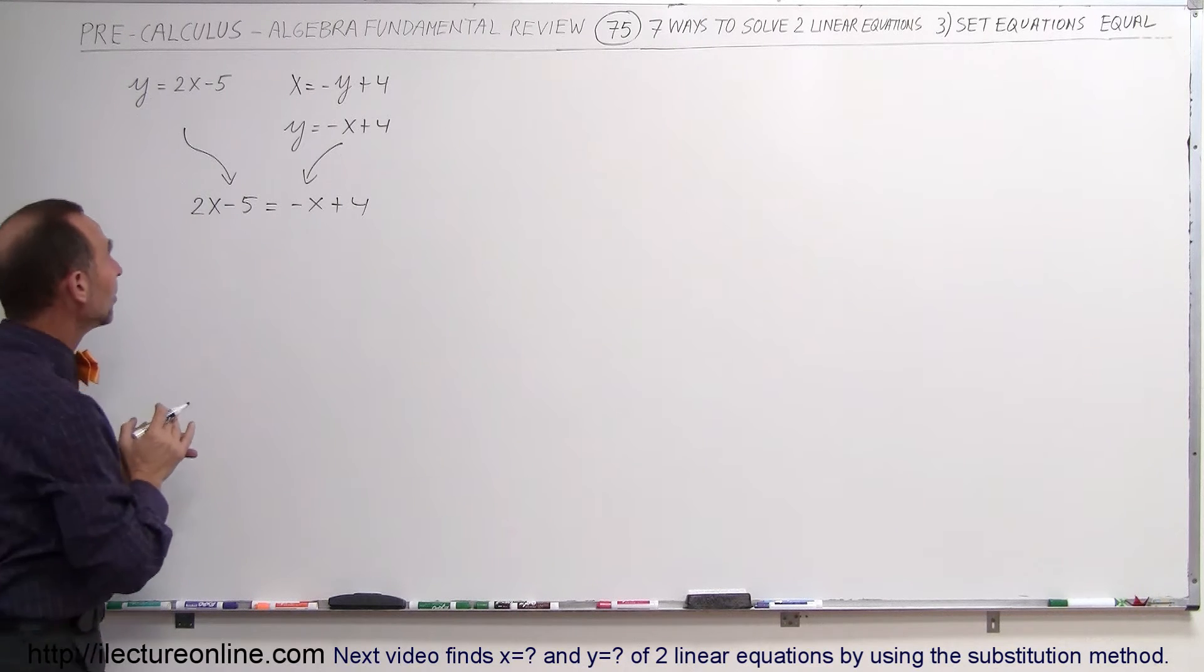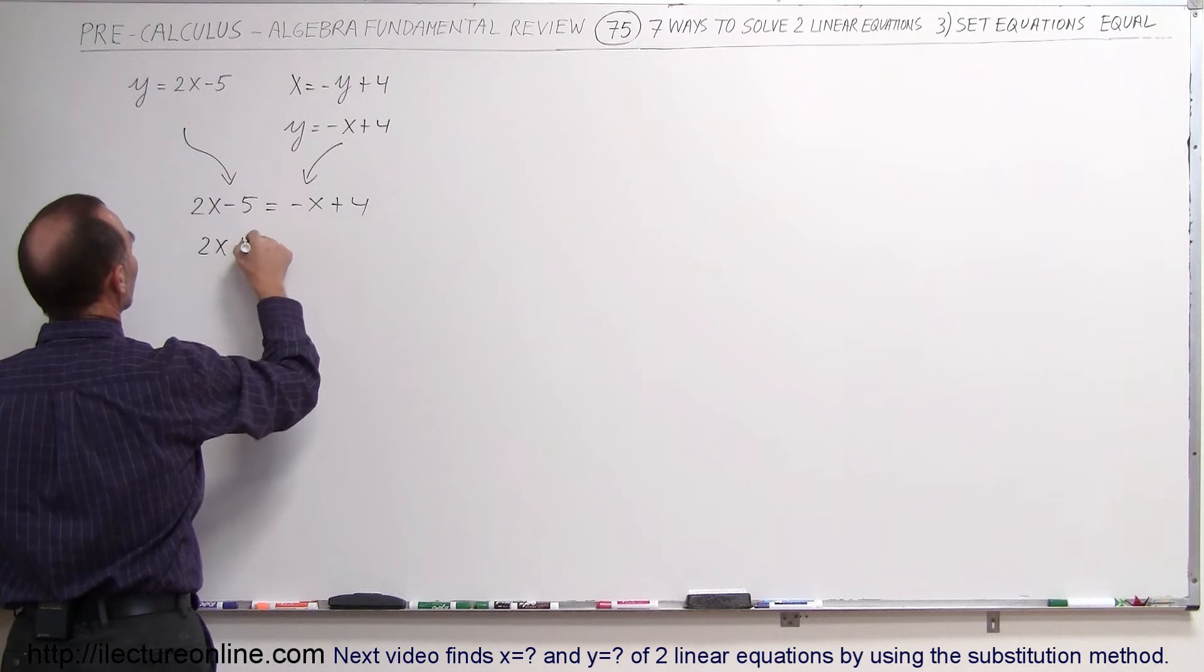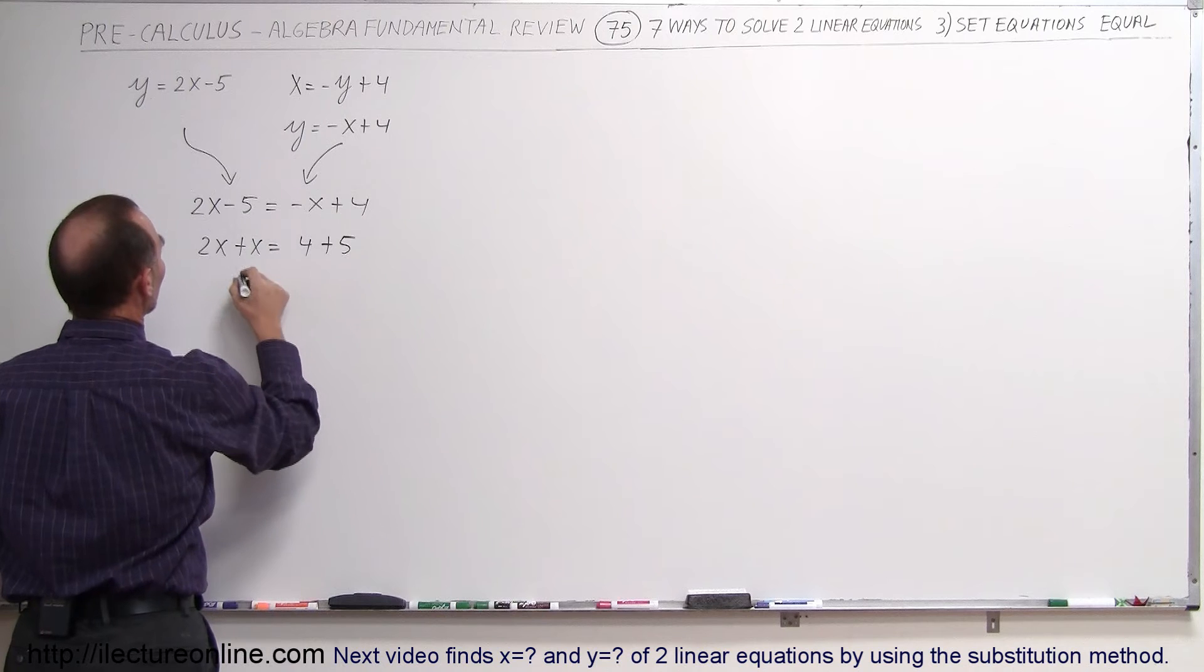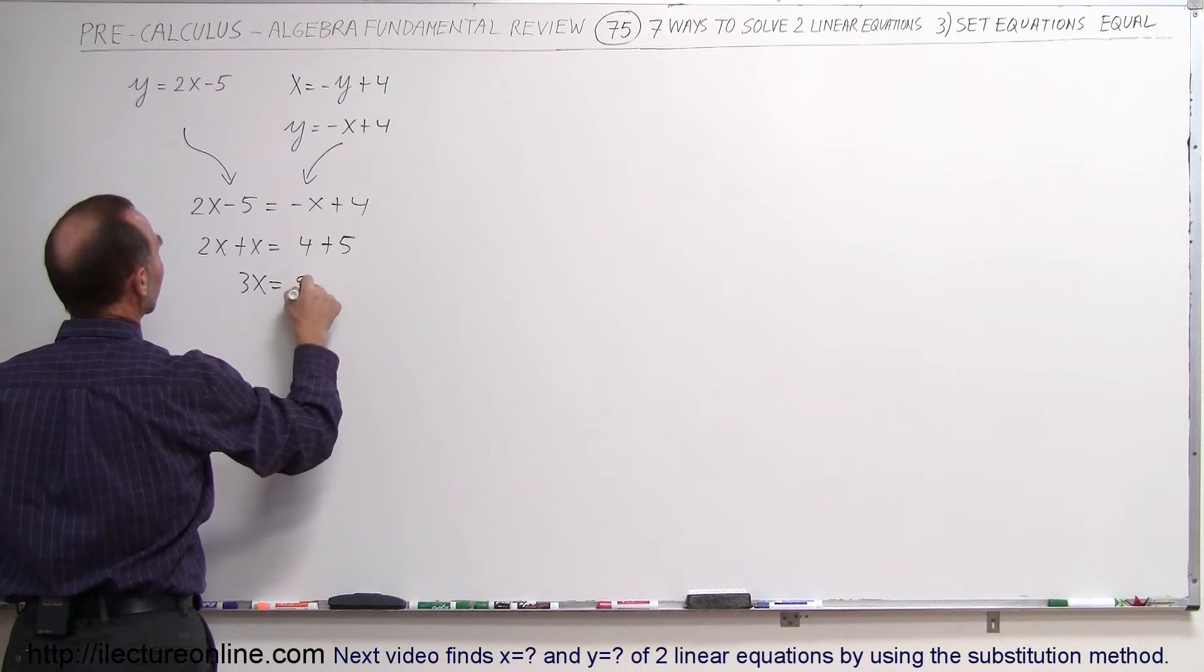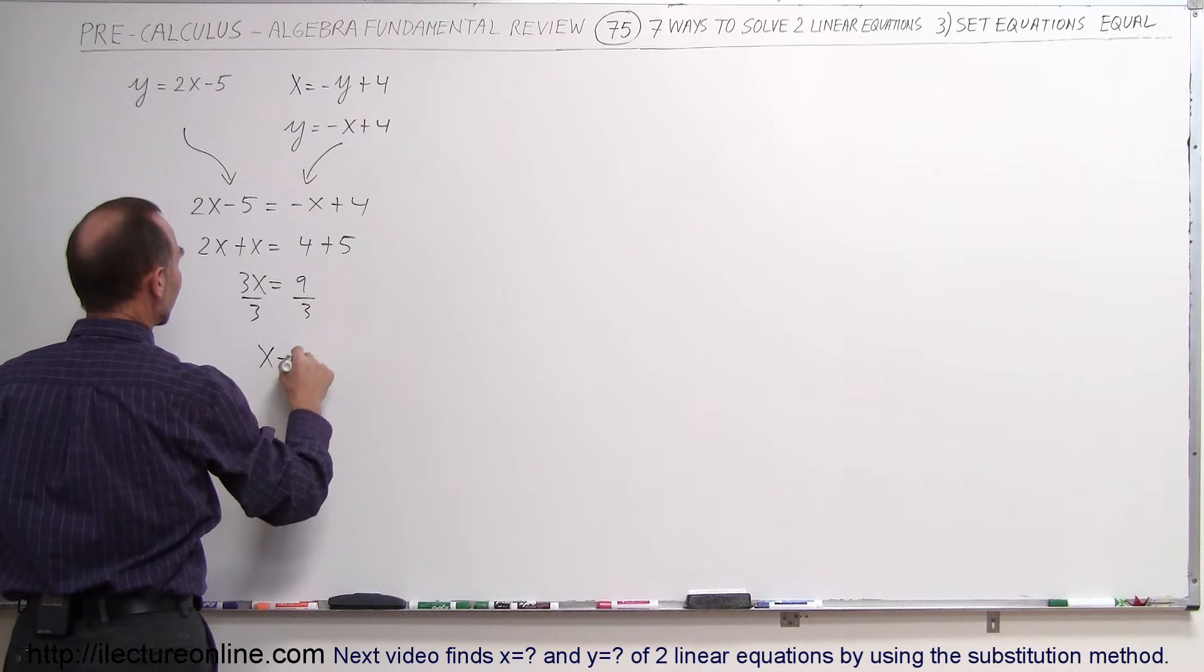Now we solve this equation for x. So here we get 2x. When we bring the minus x over it becomes plus x, is equal to 4. The minus 5 to the other side becomes plus 5. So we have 3x is equal to 9. Divide both sides by the coefficient in front of x, we get x is equal to 3.